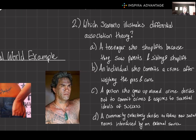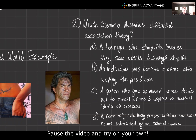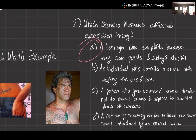We've got two more. Which scenario best illustrates differential association theory? A: a teenager decides to start shoplifting after observing and discussing the behavior of older siblings who shoplift. B: an individual decides to commit a crime after weighing the pros and cons. C: a person from a low-income neighborhood chooses not to engage in crime, aspiring to societal ideals of success. Or D: a community collectively decides to follow new social norms introduced by external influences. The answer is A — a teenager decides to shoplift after observing and discussing the behavior of older siblings who shoplift. This makes sense because the people the teenager is interacting with are determining what the teen will do.